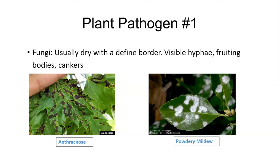The first pathogen is fungi. Based on the symptoms, it's not that difficult to identify. They normally have really dry lesions with a defined border. And sometimes you can see the visible hyphae — those fluffy hyphae on the top of the leaves. Sometimes they can produce fruiting bodies and cankers on the trunk.